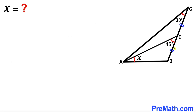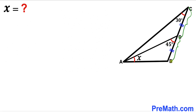Welcome to pre-math. In this video we have got a big triangle ABC along with segment AD, such that point D is the midpoint on side BC. In other words, segment CD is equal to segment BD. Moreover, angle ACD is 30 degrees and angle ADB is 45 degrees. Furthermore, angle BAD is represented by angle X, and our task is to calculate angle X.